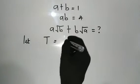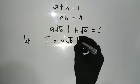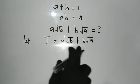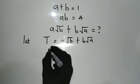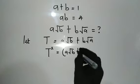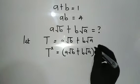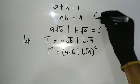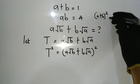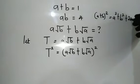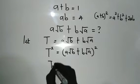I'm going to let t equal this expression: a times the square root of b plus b times the square root of a. From here, I'm going to square both sides of this equation, so we have t squared is equal to a times the square root of b plus b times the square root of a, all raised to the power of 2. We're going to make use of the identity: (a + b)² equals a² plus b² plus 2ab.